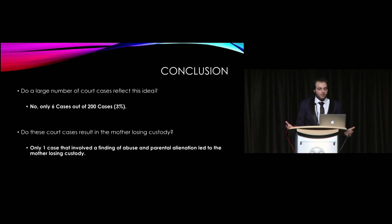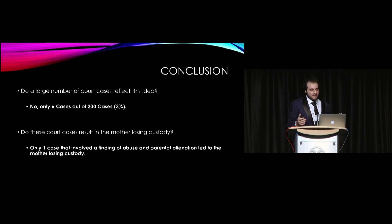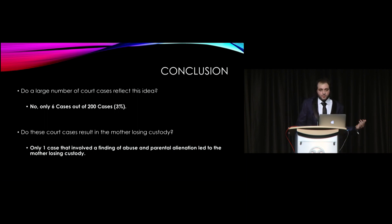In summary: the first claim — do a large number of court cases show a finding of both alienation and abuse — the answer is no; only six cases out of 200 (3%) had that. The second claim — that these court cases result in the mother losing custody — also fails: only one case involving findings of both abuse and parental alienation led to the mother losing custody, and even then she retained custody of two of her three children.